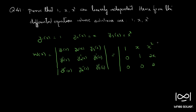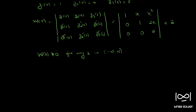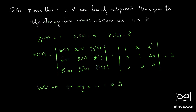This reduces to W(x) = 2. So we can say W(x) is not equal to 0 for any x in the interval minus infinity to infinity. Therefore these are linearly independent functions.